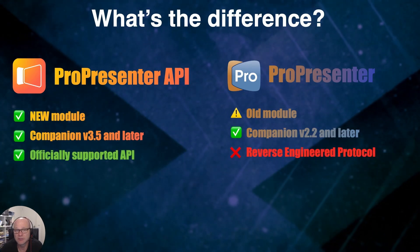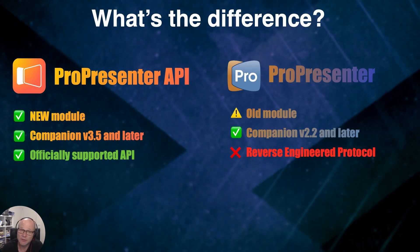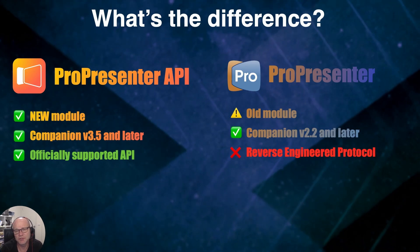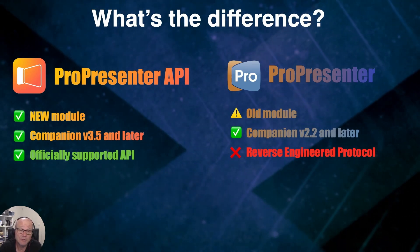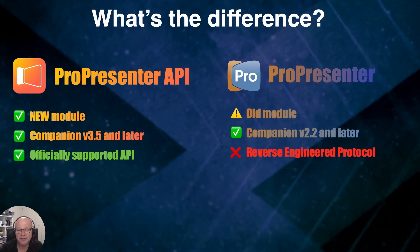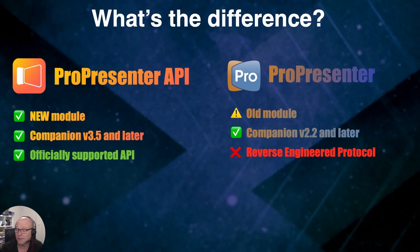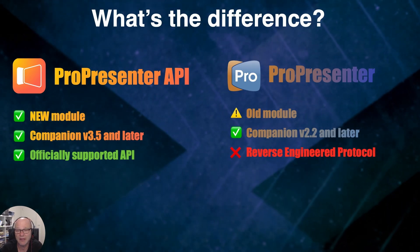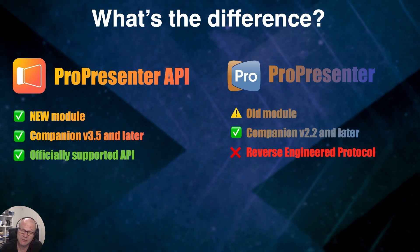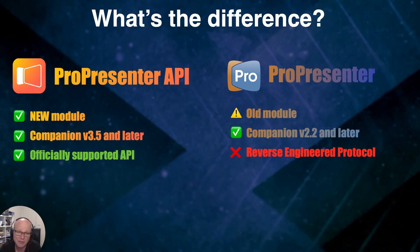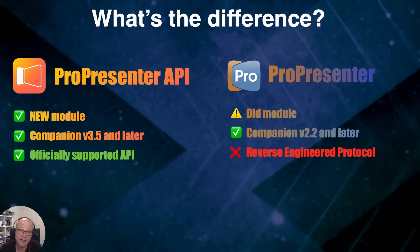One important difference between the two modules is how they connect. The old module connects using a reverse-engineered protocol, and the new module connects using the officially supported API. The real difference is vendor support. With a reverse-engineered protocol, if I see something that looks like a bug, there's no platform to go to the vendor for support and ask for a fix. Whereas with the officially supported API, that conversation with RV is absolutely supported and we can get things fixed.